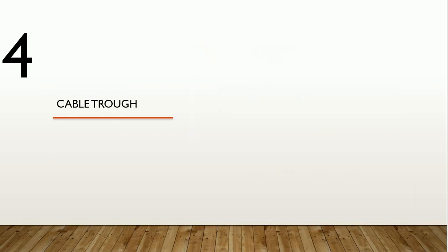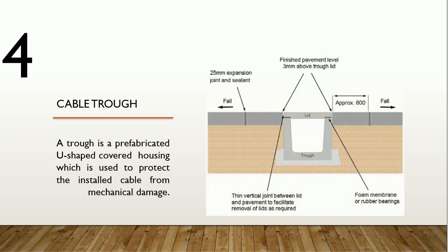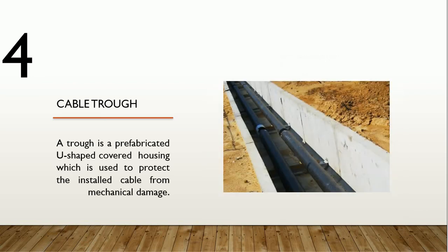The fourth type is cable trough, where a trough is a pre-fabricated U-shaped cover housing used to protect the installed cable from mechanical damage. As you see, the cable will be installed inside a U-shaped trough made of concrete and then covered with a cover that is also made of concrete.